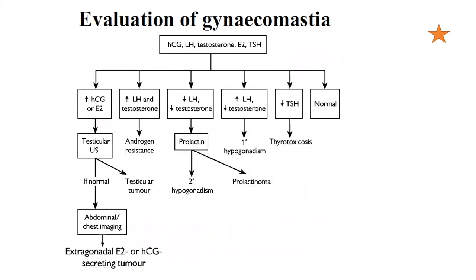For evaluation of gynecomastia, five hormonal patterns are examined: HCG, LH, testosterone, estradiol, and TSH. If HCG or E2 is increased, perform a testicular ultrasound; if normal, proceed to abdominal or chest imaging to look for extra-gonadal estradiol or HCG-secreting tumors. Increased LH with increased testosterone points to androgen resistance. Decreased LH with decreased testosterone indicates secondary hypogonadism — look for prolactinoma. Increased LH with decreased testosterone indicates primary hypogonadism. Decreased TSH indicates thyrotoxicosis, which can also cause gynecomastia.